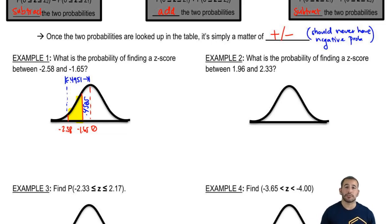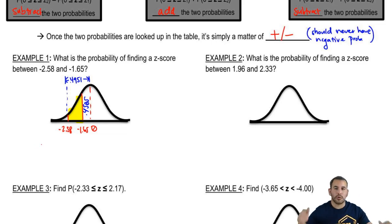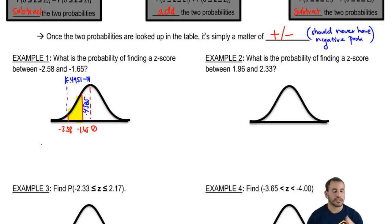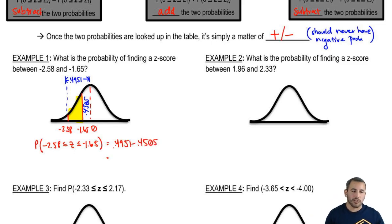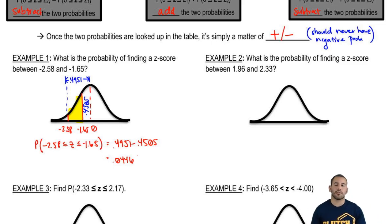So now what do we do? If they're on the same side — whether both on the left or both on the right — we subtract those probabilities. Because we have the bigger one, 0.4951, and the smaller chunk, 0.4505. The remainder is the probability from negative 2.58 to negative 1.65. So the probability that z is between negative 2.58 and negative 1.65 is 0.4951 minus 0.4505, which equals 0.0446. So there's about a 4.46% chance of getting a z-score in that range.